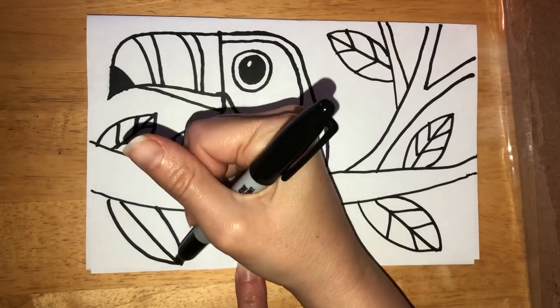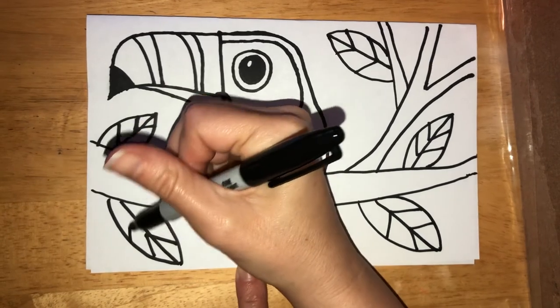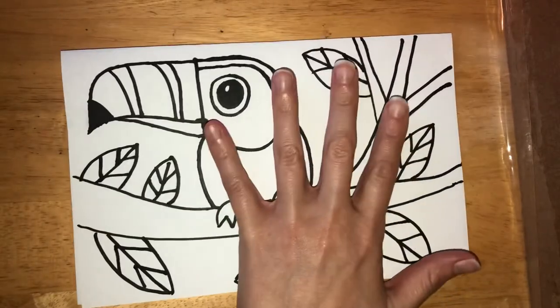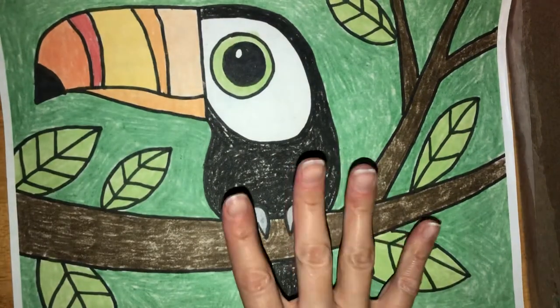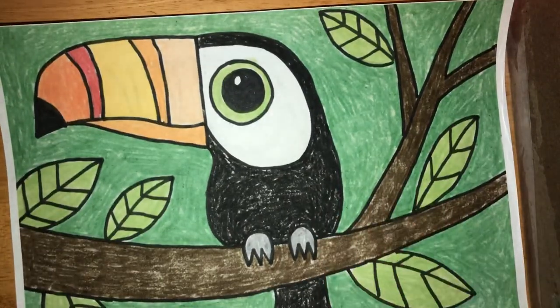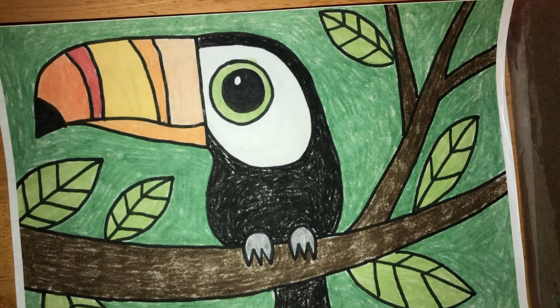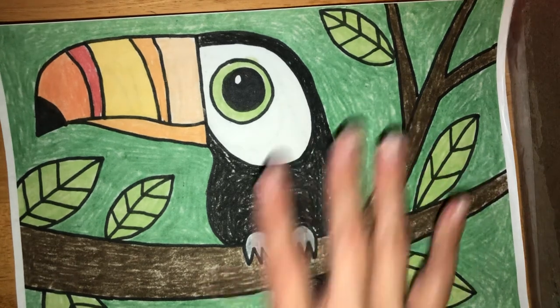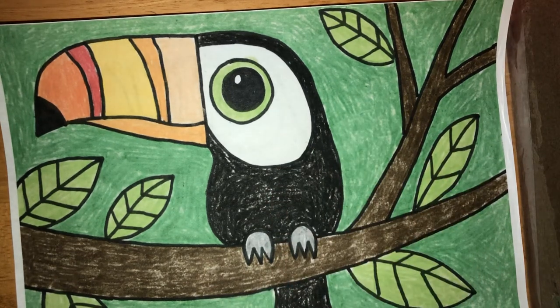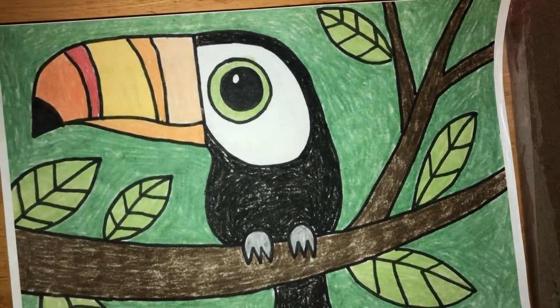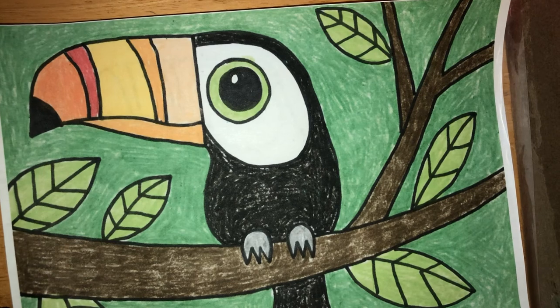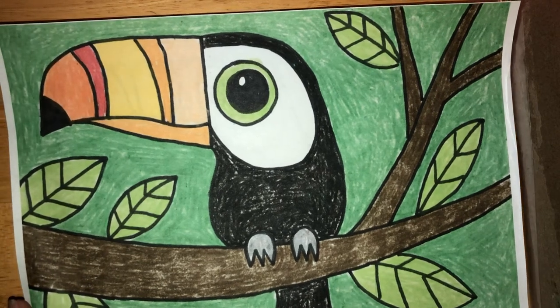And we have our toucan—he looks awesome! So now when you guys color it, again you can choose to follow one of my pictures or you can go with my original drawing. This was colored in crayon, so you can either use crayon, you can use markers, whatever works best for you guys to get those beautiful colors. And again, if you want to change the colors of the beak to fit one of the other toucans, that's great too. All right, thanks for following along today!